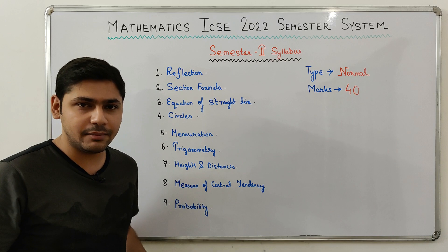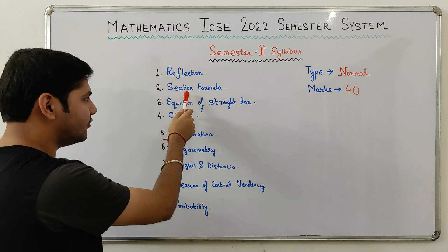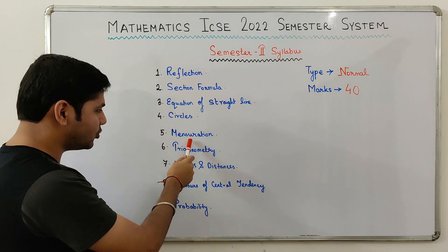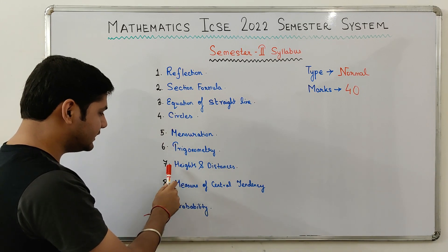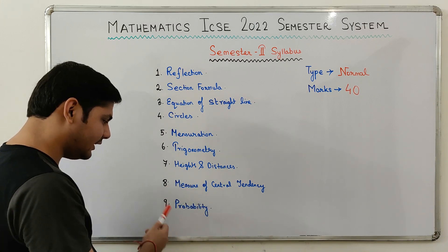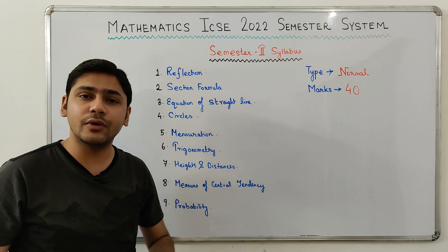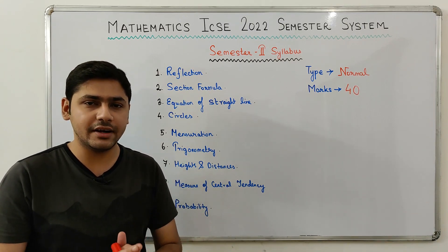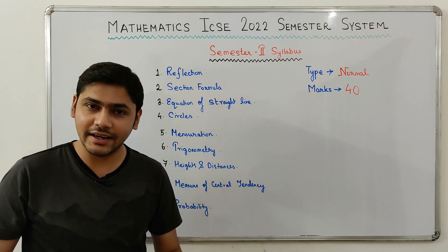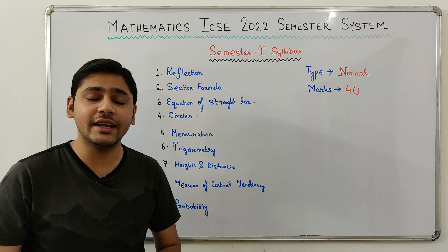There are nine chapters in the syllabus for semester two: first Reflection, second Section Formula, third Equation of Straight Line, fourth Circles, fifth Mensuration, sixth Trigonometry, seventh Heights and Distances, eighth Measure of Central Tendency, and the ninth chapter Probability. This is the syllabus for semester two examination held during March and April 2022.